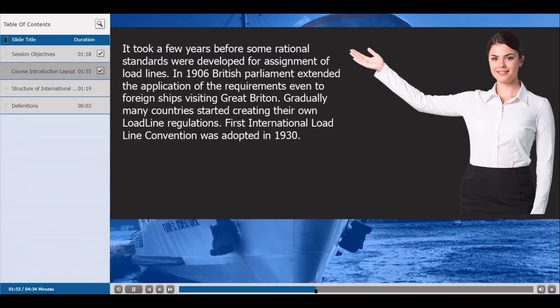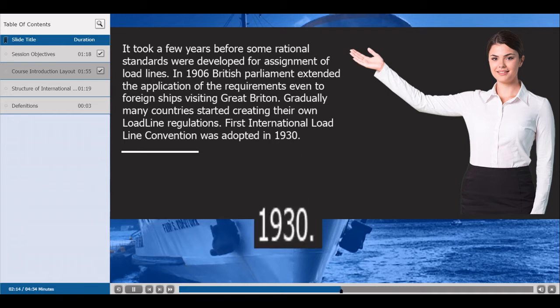It took a few years before some rational standards were developed for assignment of load lines. In 1906, the British Parliament extended the application of the requirements even to foreign ships visiting Great Britain. Gradually, many countries started creating their own load line regulations, and the First International Load Line Convention was adopted in 1930.